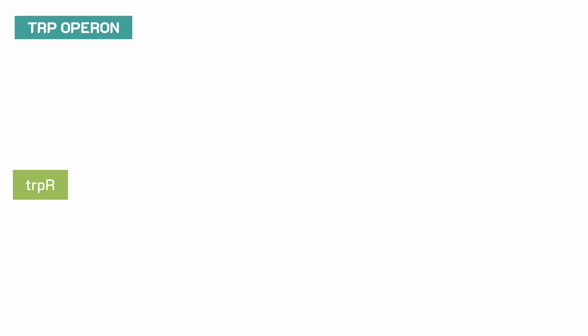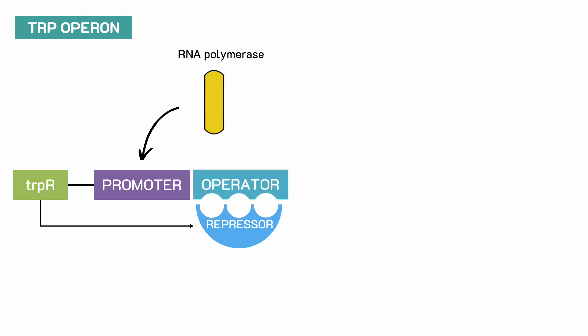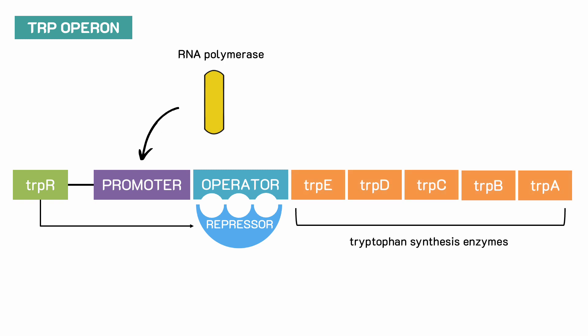The tryptophan operon consists of a regulatory gene that encodes a repressor, a promoter to which RNA polymerase can bind, an operator, a binding site for the repressor, and five structural genes that code for enzymes that synthesize tryptophan.